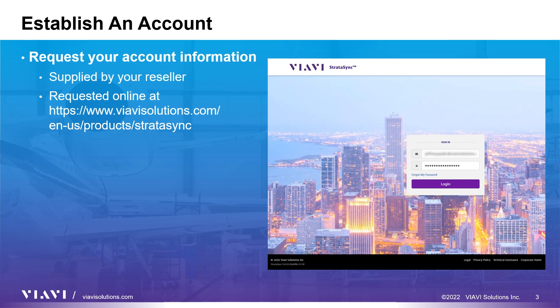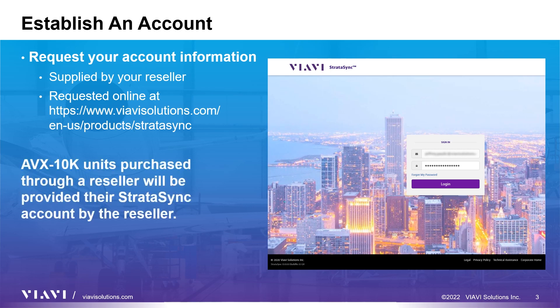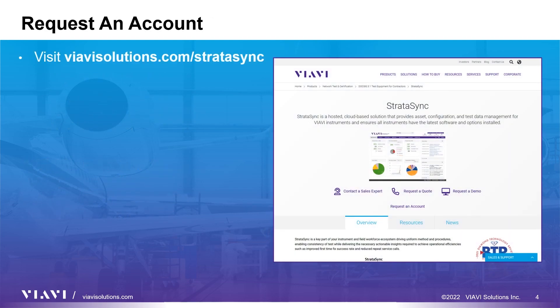Accessing the Stratasync system to access reports or manage assets requires a Viavi account. There are two paths to obtain an account. If you purchased your AVX10K from a reseller or channel partner, you will need to ask your reseller or channel partner to provide you with your Viavi account information. If you did not purchase from a reseller or channel partner, you will need to follow these steps.